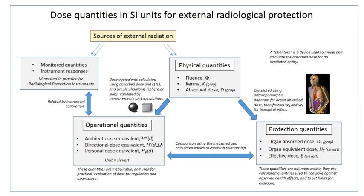Deterministic effects are those that reliably occur above a threshold dose, and their severity increases with dose. Deterministic effects are not necessarily more or less serious than stochastic effects; either can ultimately lead to a temporary nuisance or a fatality. Examples of deterministic effects include acute radiation syndrome by acute whole-body radiation, radiation burns from radiation to a particular body surface, and radiation-induced thyroiditis, a potential side effect from radiation treatment against hypothyroidism.